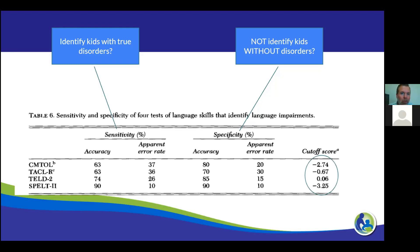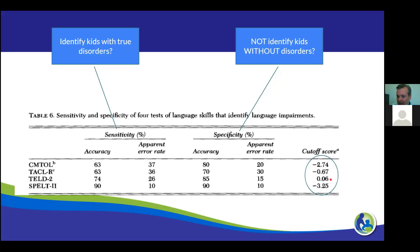What made my jaw hit the floor when I first read this was looking at the variability in cutoff scores. For the Clark-Madison, if you scored below 2.74 standard deviations below the mean, you had a disorder — so if you scored 1, 1.5, 1.75, 2, or 2.5 SD below the mean, you were considered not to have a disability. We contrast that with the TACL and TELL, where those cutoff scores were much higher: scoring just half or three-quarters of a standard deviation below the mean would classify you as having a disability.